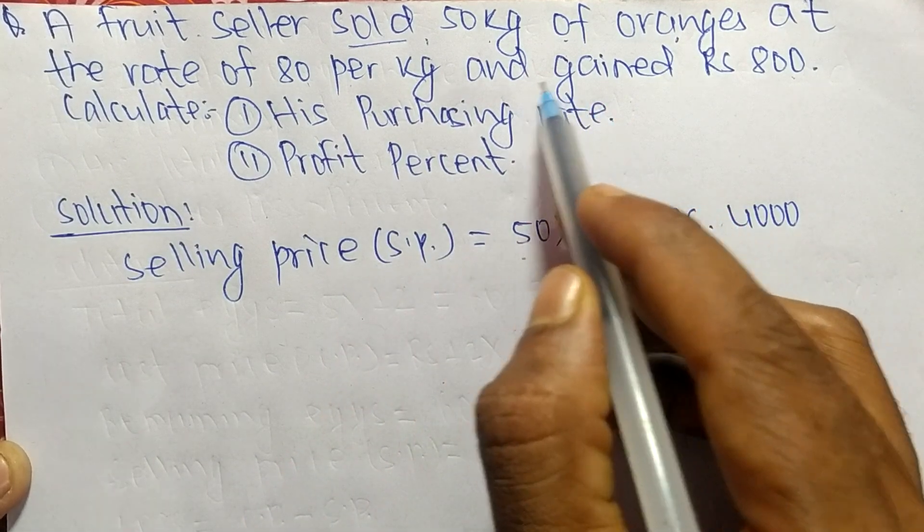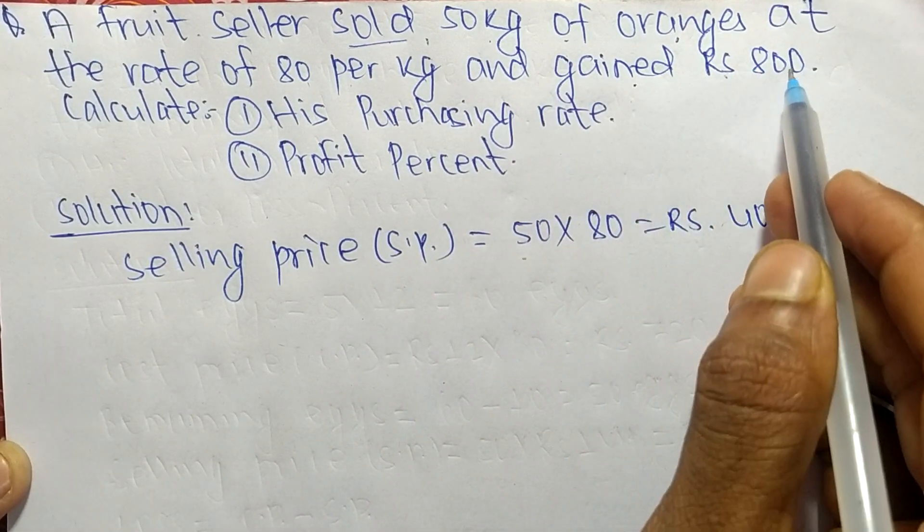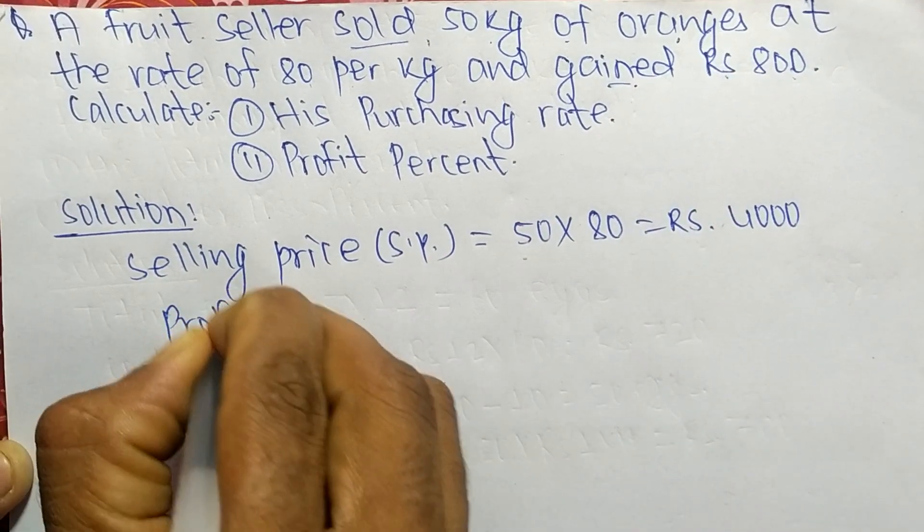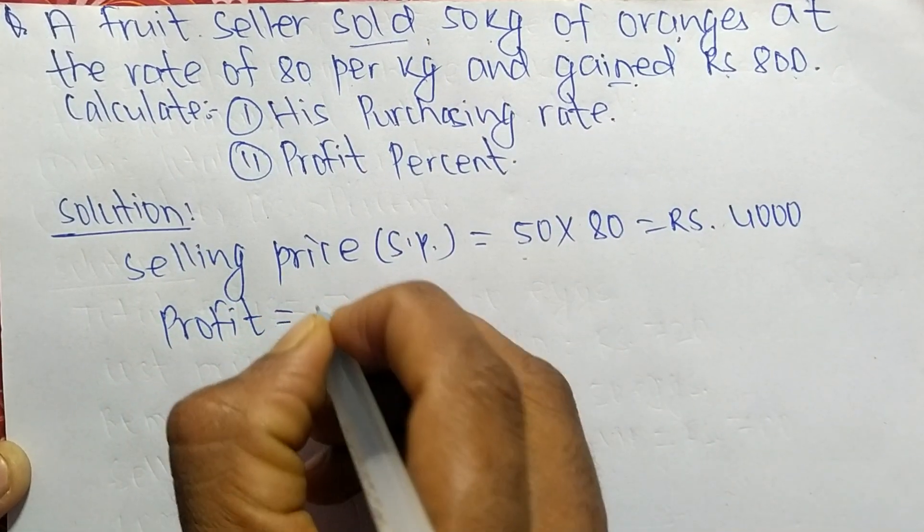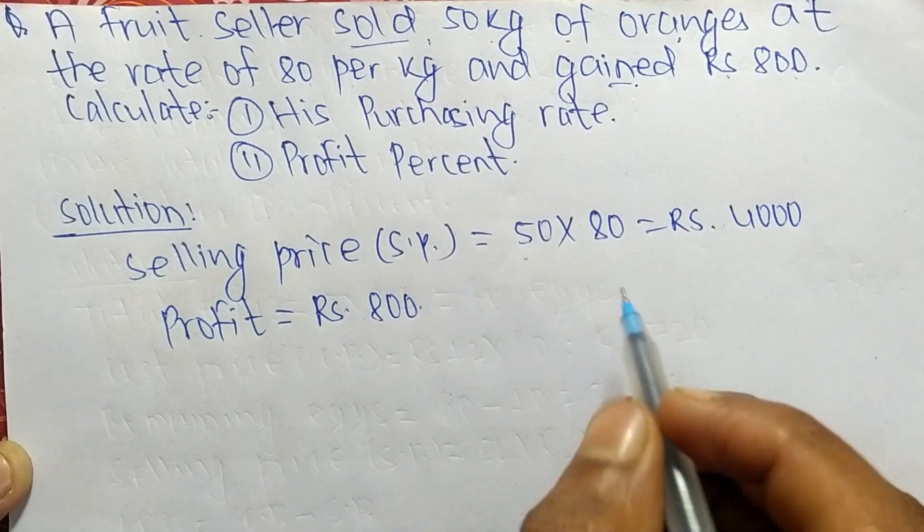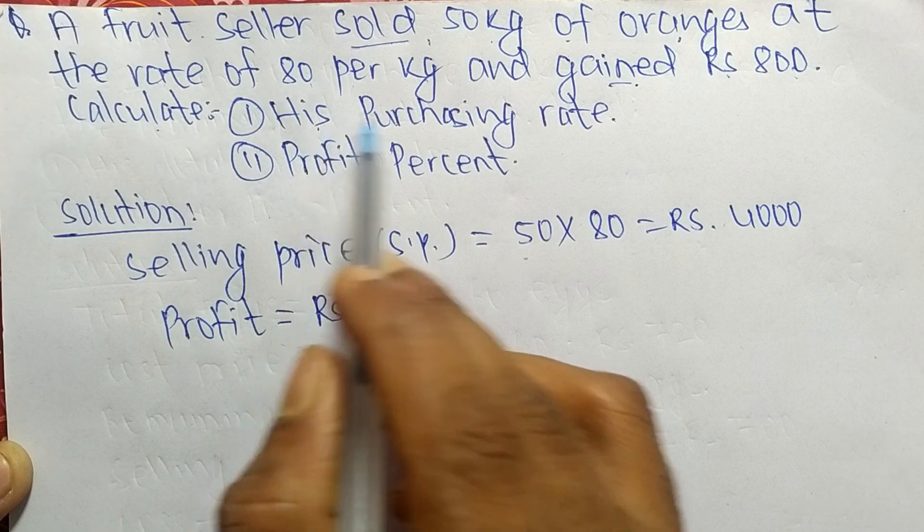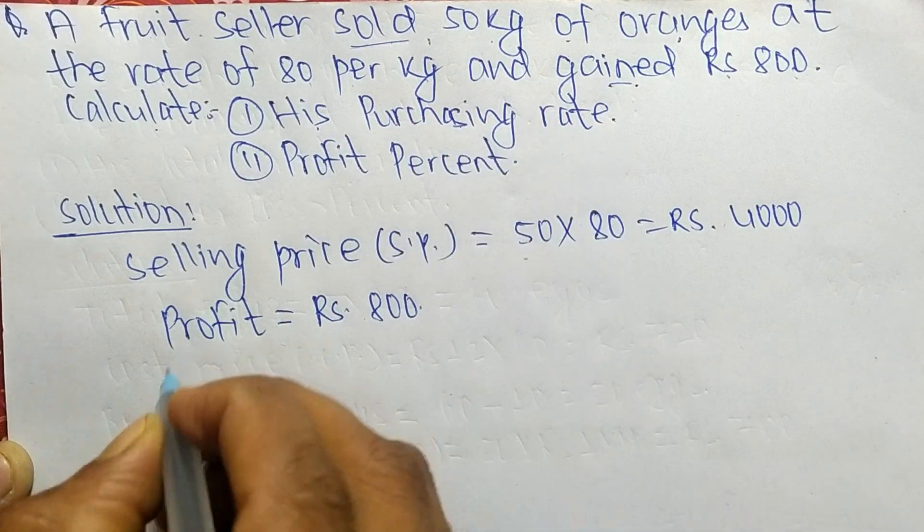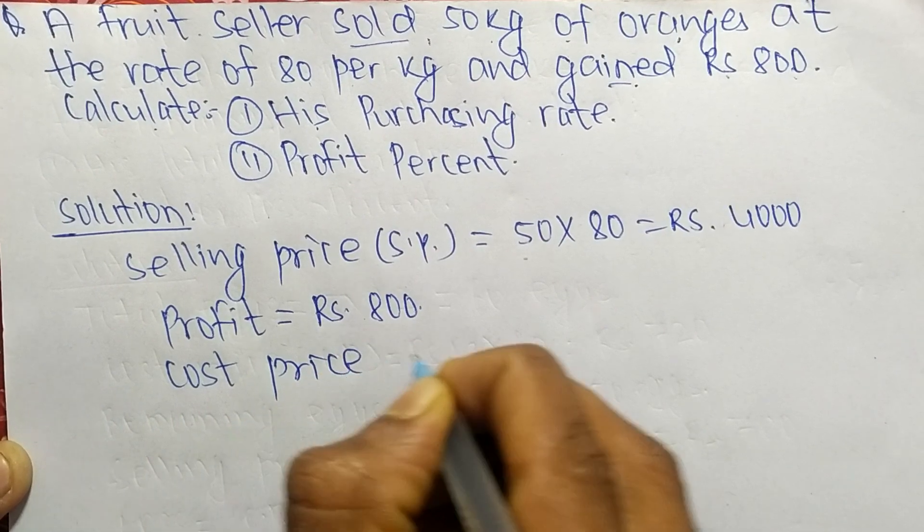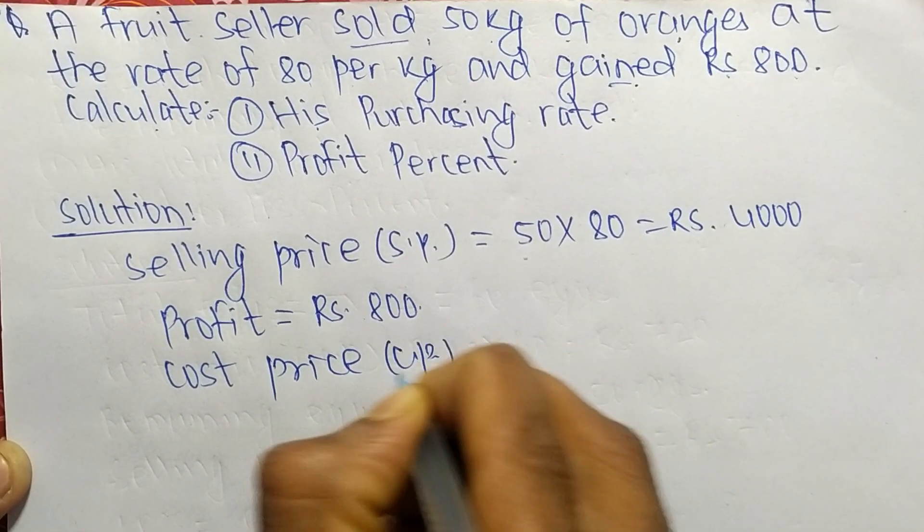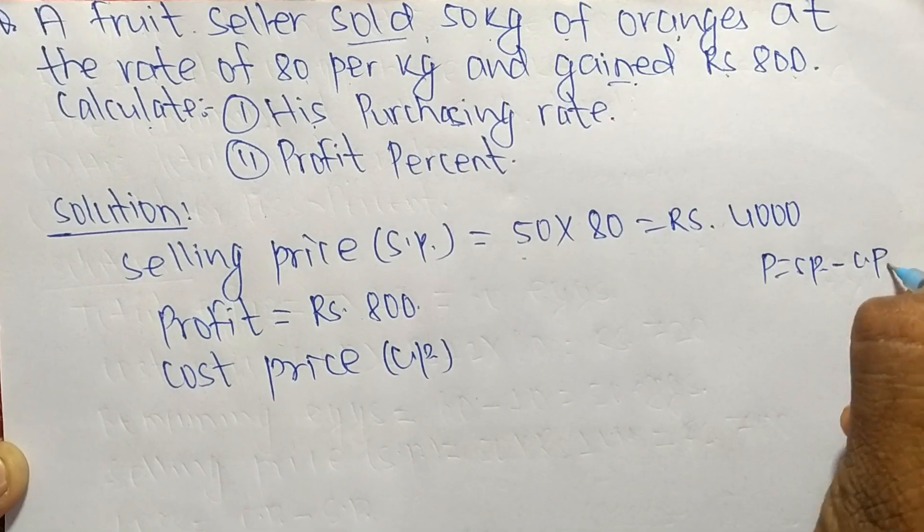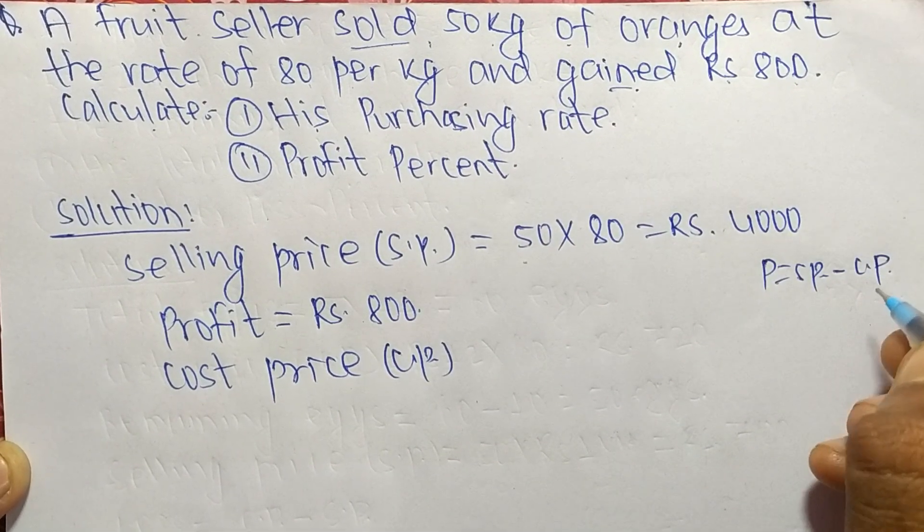And gained Rs. 800 - 'gained' means profit. So profit is equal to Rs. 800. We have to calculate the purchasing rate, that is cost price. We know profit is equal to SP minus CP.